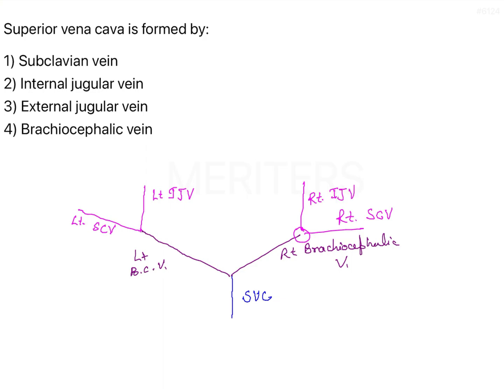The left and right internal jugular veins pass through a foramen and enter the brain. The foramen is called the jugular foramen.